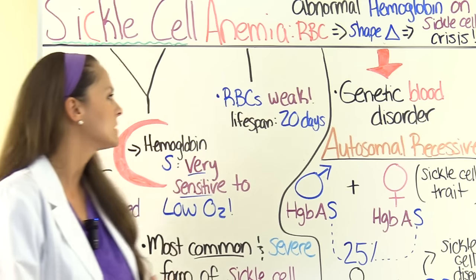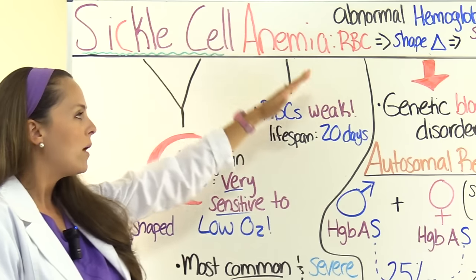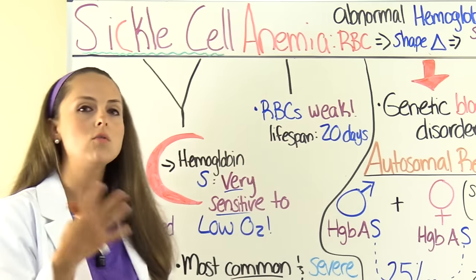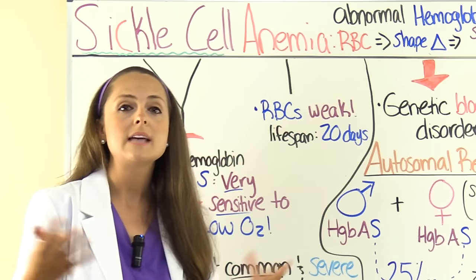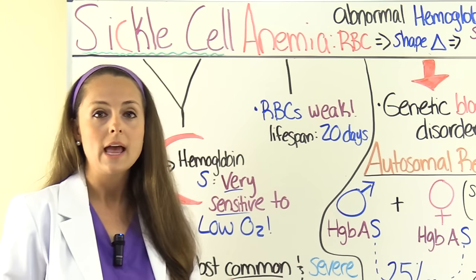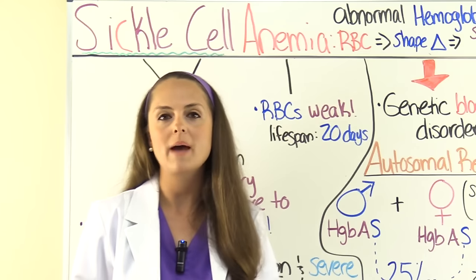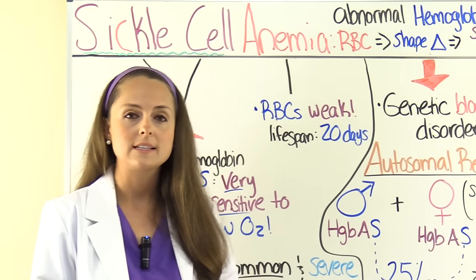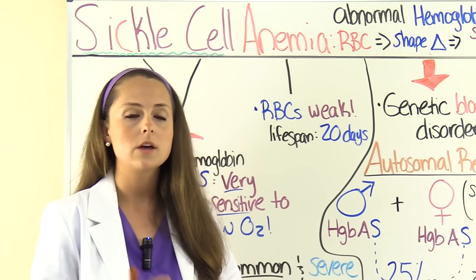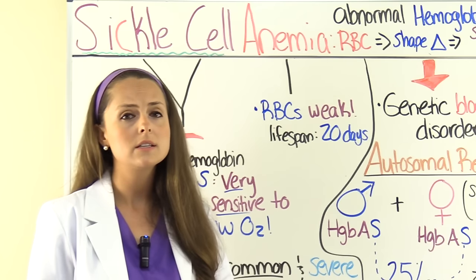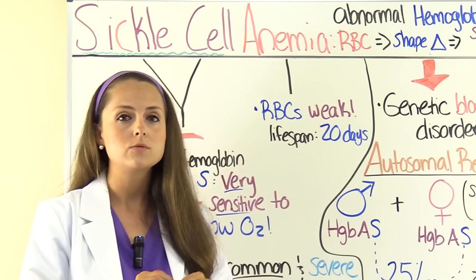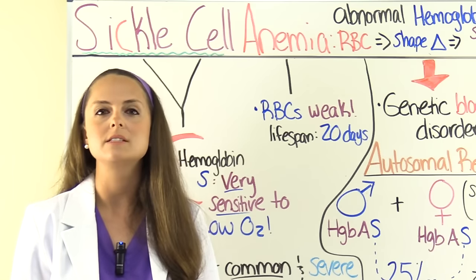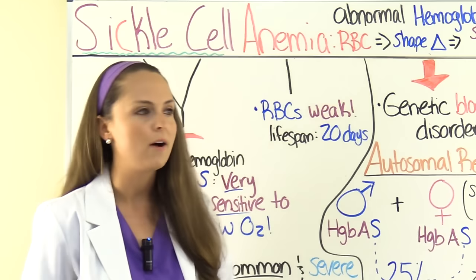Where does the anemia part come from? Because of these red blood cells' unique C-shape, they are really weak, so they don't last as long as normal red blood cells. Normal red blood cells last about 120 days, but these tend to rupture and break down in about 20 days. The bone marrow can't keep up with production. Also, the spleen becomes overworked — blood flow can get blocked to it due to the sickled cells sticking together, and since the spleen helps fight infection, these patients are also at risk for infection and splenomegaly.